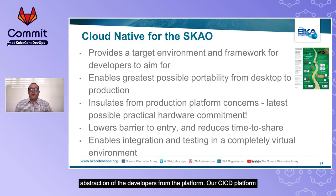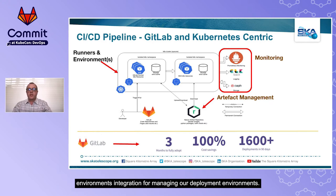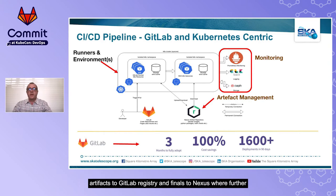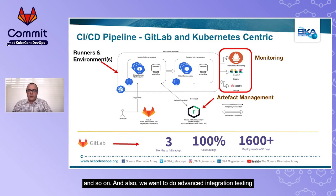Our CI/CD platform factory is Kubernetes-centric. We use the Kubernetes GitLab runners for launching pipelines and use the GitLab native Kubernetes environments integration for managing our deployment environments. Pipelines build artifacts on every branch and publish intermediate artifacts to GitLab registry and finals to Nexus, where further pipelines run on a continuous basis to exercise extended artifact testing. This extended testing covers things like source code analysis, dependency checking, license checking, security checking, and advanced integration testing for our array verification process at productionization.